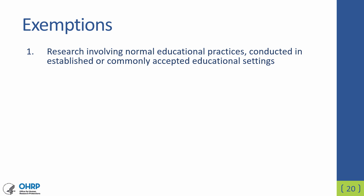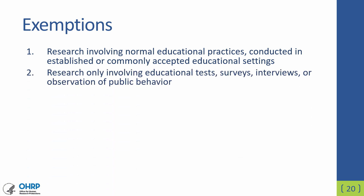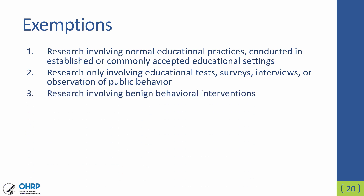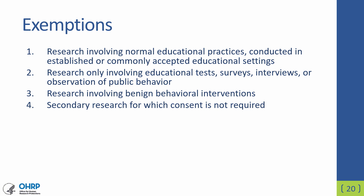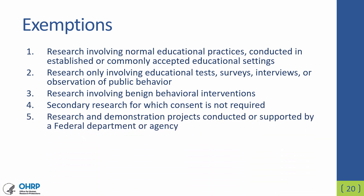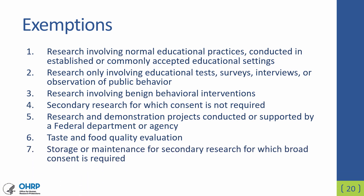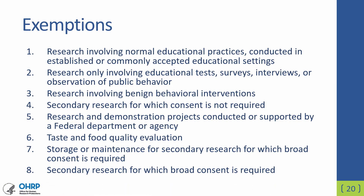Exemption 1 is for research involving normal educational practices conducted in established or commonly accepted educational settings. Exemption 2 covers research that only involves educational tests, surveys, interviews, or observations of public behavior. Exemption 3 involves benign behavioral interventions. Exemption 4 is for secondary research for which consent is not required. Exemption 5 is for research and demonstration projects conducted or supported by a federal department or agency. Exemption 6 is for taste and food quality evaluations. Exemption 7 is for storage or maintenance for secondary research for which broad consent is required. Exemption 8 is for secondary research for which broad consent is required. Please see the other webinars in this series for specific information on these exemptions.